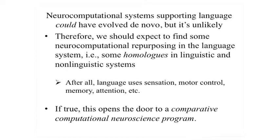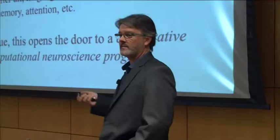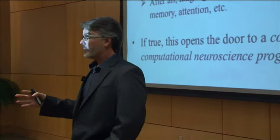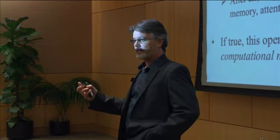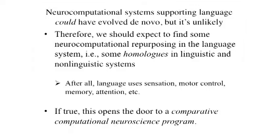Language evolved in this context. It's possible that the systems supporting language evolved de novo in specialized circuits, but that's extremely unlikely — that's not typically how evolution works. It usually takes advantage of what's already there and modifies it for a particular purpose. So if this reasoning is correct, we should expect to find some neurocomputational repurposing in the language system — homologues between linguistic and non-linguistic systems.